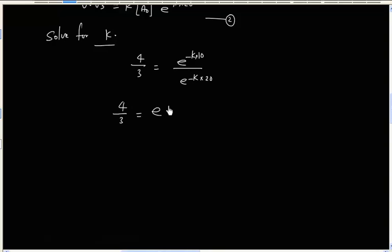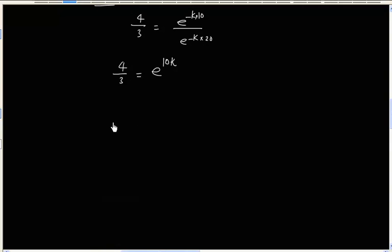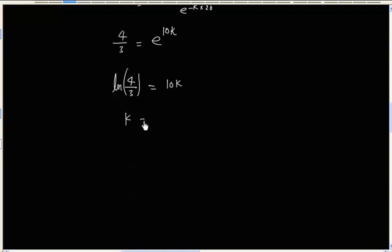We will have... Now we can take log both sides. So k is equal to 1 by 10 ln 4 by 3.